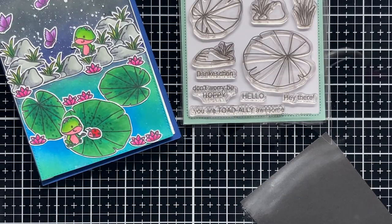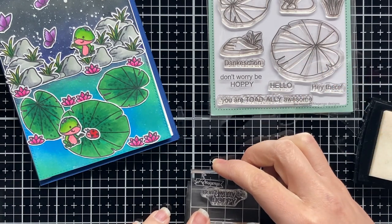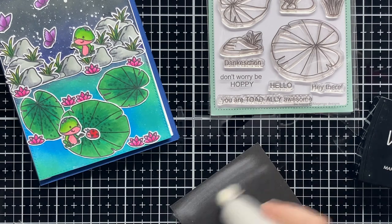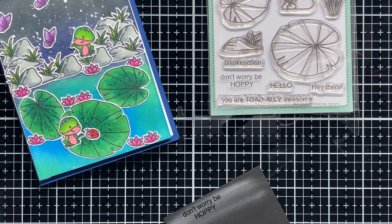For the sentiment, I chose a sentiment from the same stamp set and it says don't worry, be hoppy. And I am embossing it on a piece of black cardstock using VersaMark ink and white embossing powder.